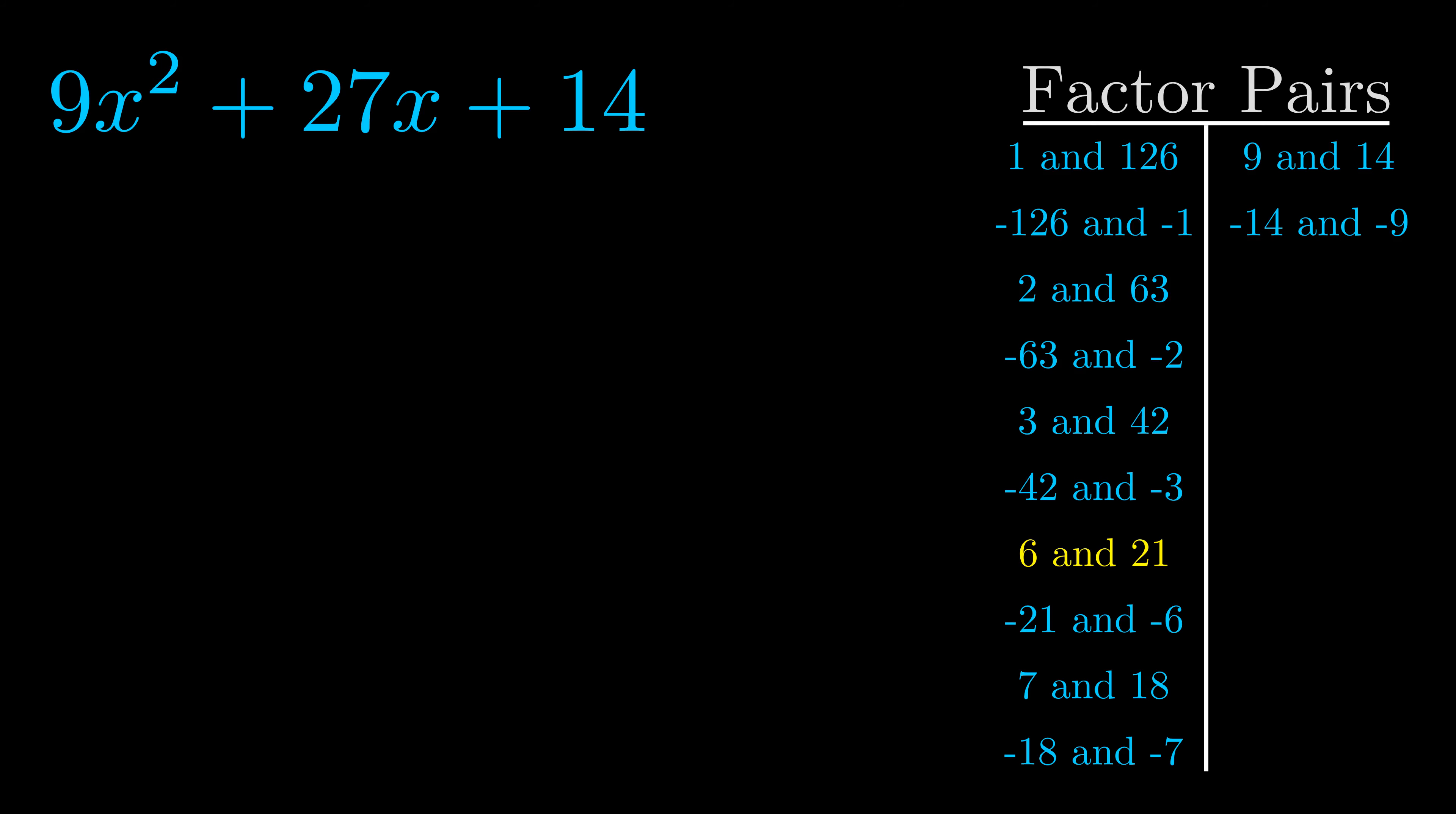Now once you have these factor pairs the goal is to find which of these pairs adds to the b-value. The b-value is the coefficient on the x term. That's the middle term, the one that we haven't done anything with yet. And really this is the only factor pair that we need.